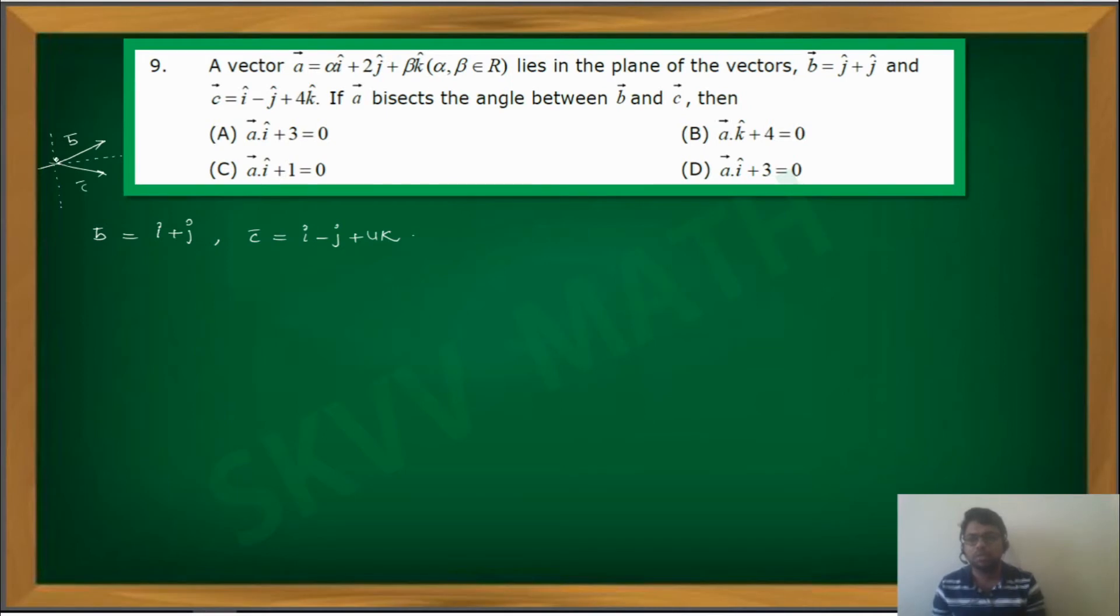Now to find out this internal angular bisector or external angular bisectors, we have a formula. What is that? B bar by mod b bar plus c bar by mod c bar, or minus.